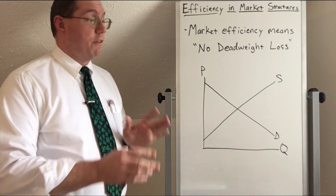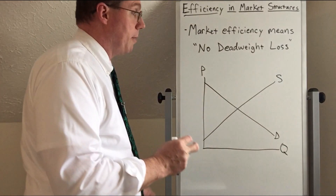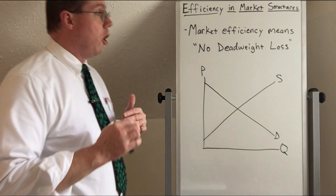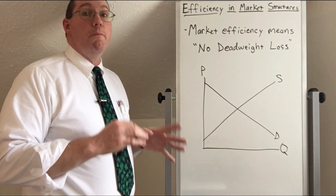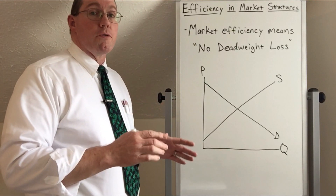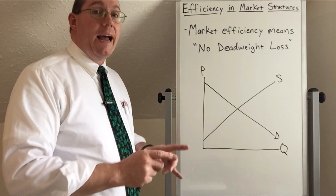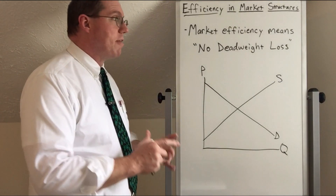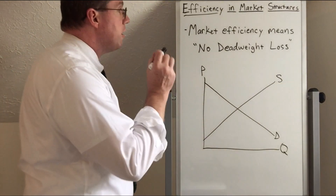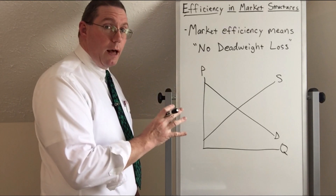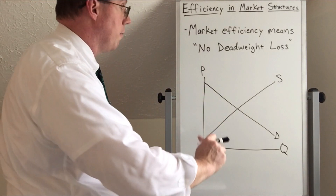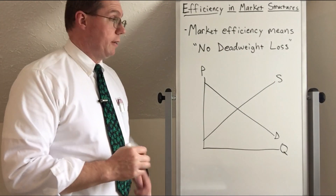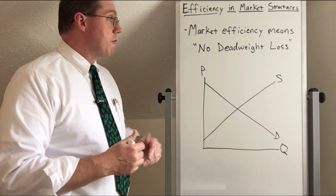Market efficiency is related to macroeconomics. In fact, this is one of the places where microeconomics and macroeconomics touch each other. In microeconomics, we want our markets themselves to be efficient — we want producers to produce as much as they can for what buyers want to buy. Market efficiency in a principles of microeconomics class basically means that there is no deadweight loss in that particular market. A market is efficient if there is no deadweight loss.